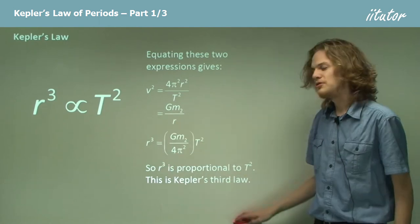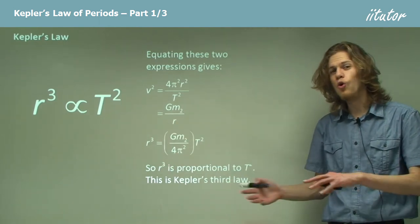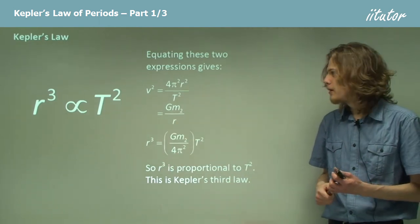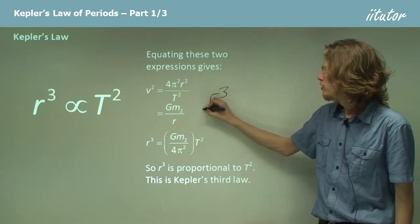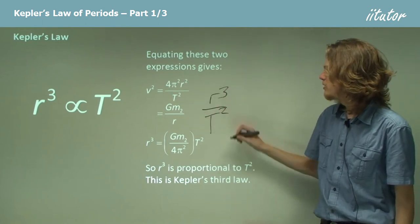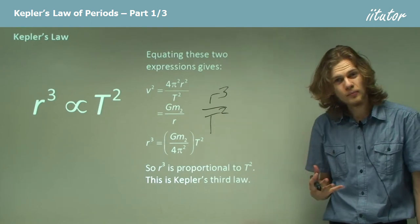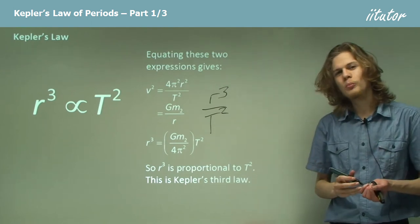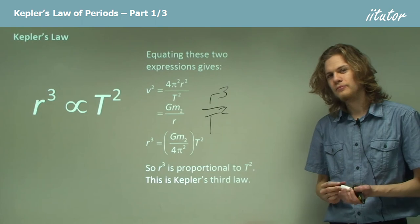And because the mass of the central body will be the same for all objects orbiting, we can say that r³ over T² will equal a constant for all bodies orbiting the central body.